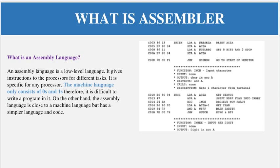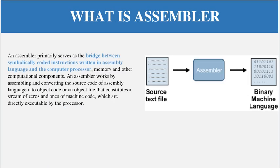Because assembly language talks directly with the hardware, it is very fast. However, it is very difficult to write code in assembly language because it is not very user-friendly. The advantage of assembly language is that it is a low-level language close to machine language — zeros and ones — and it is very fast to execute code because it directly communicates with the hardware.